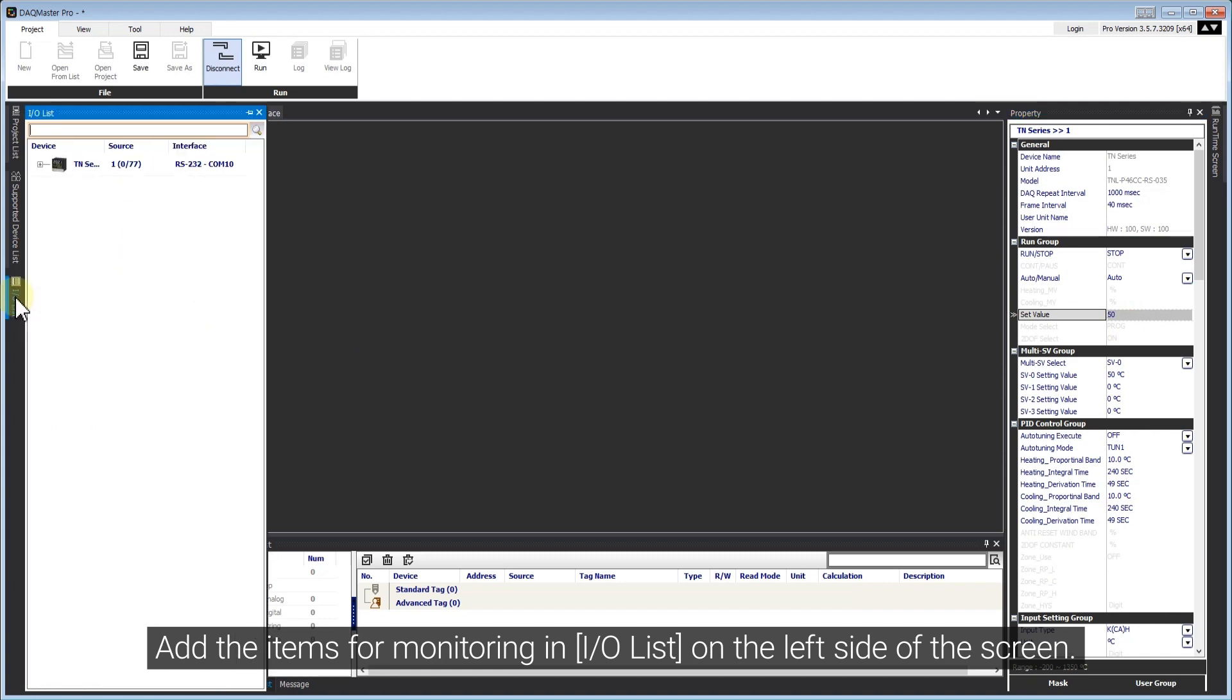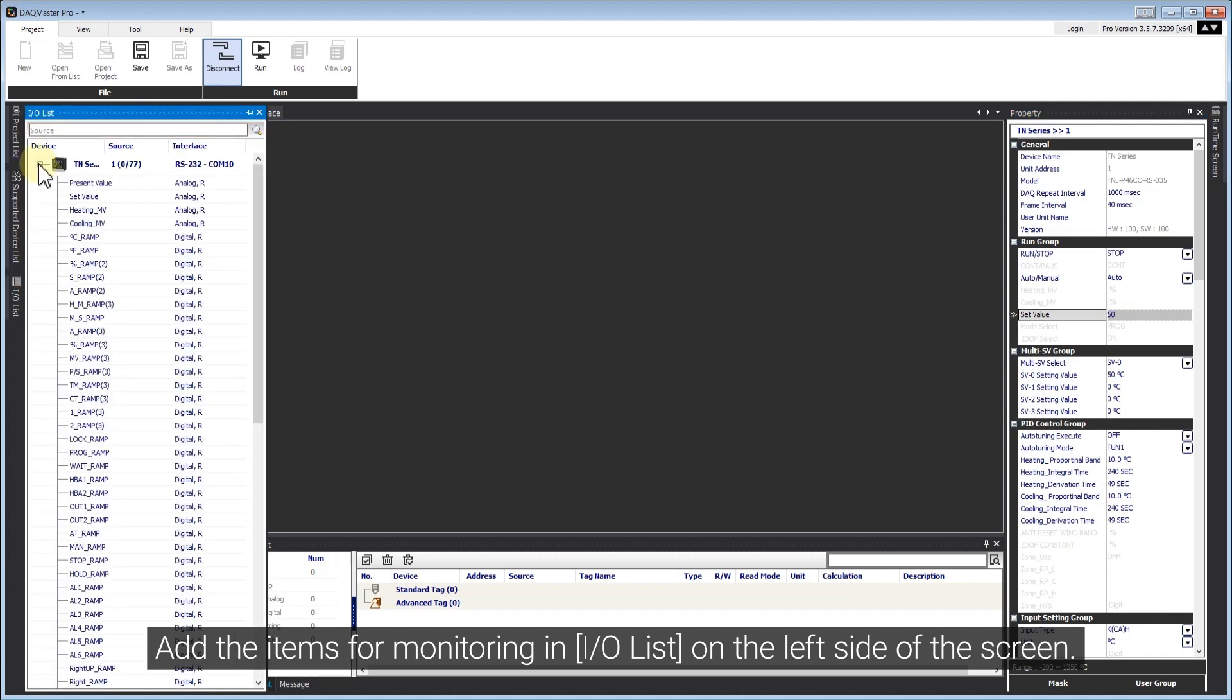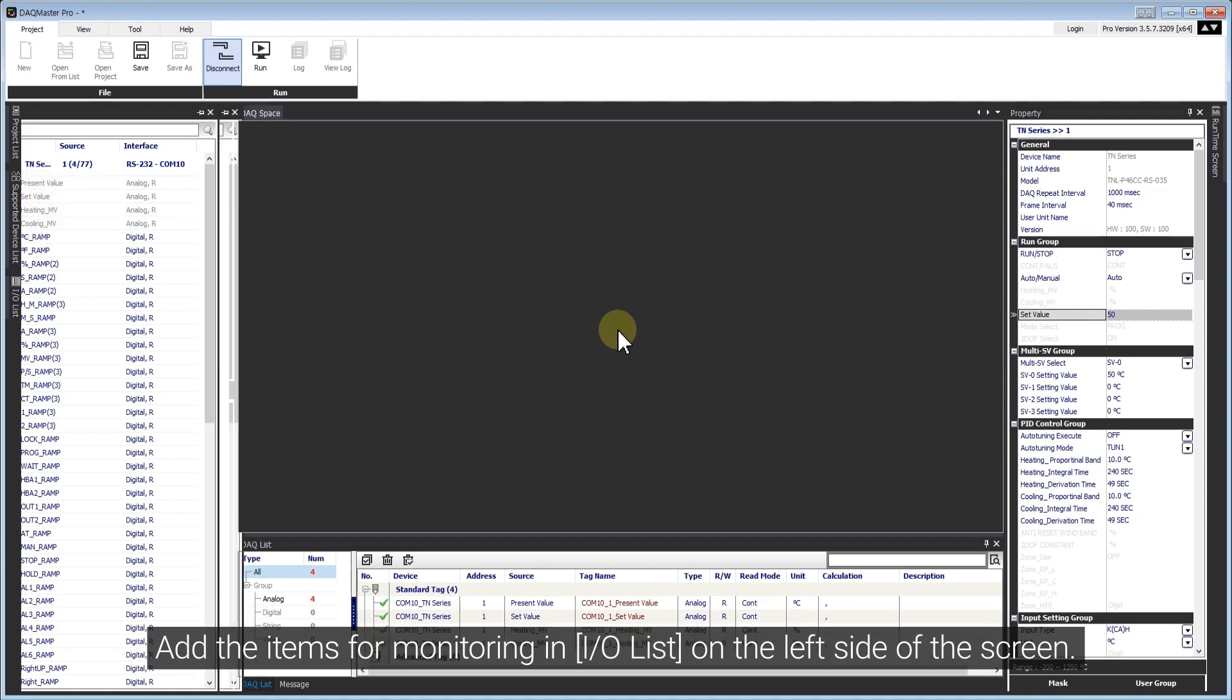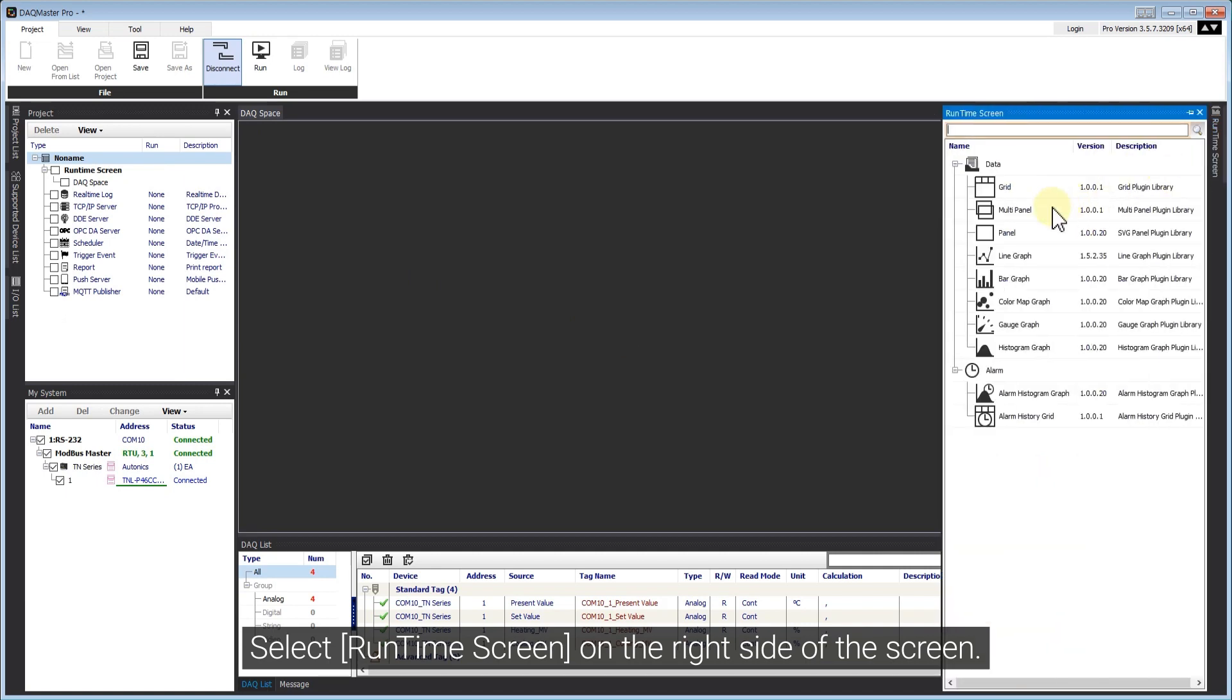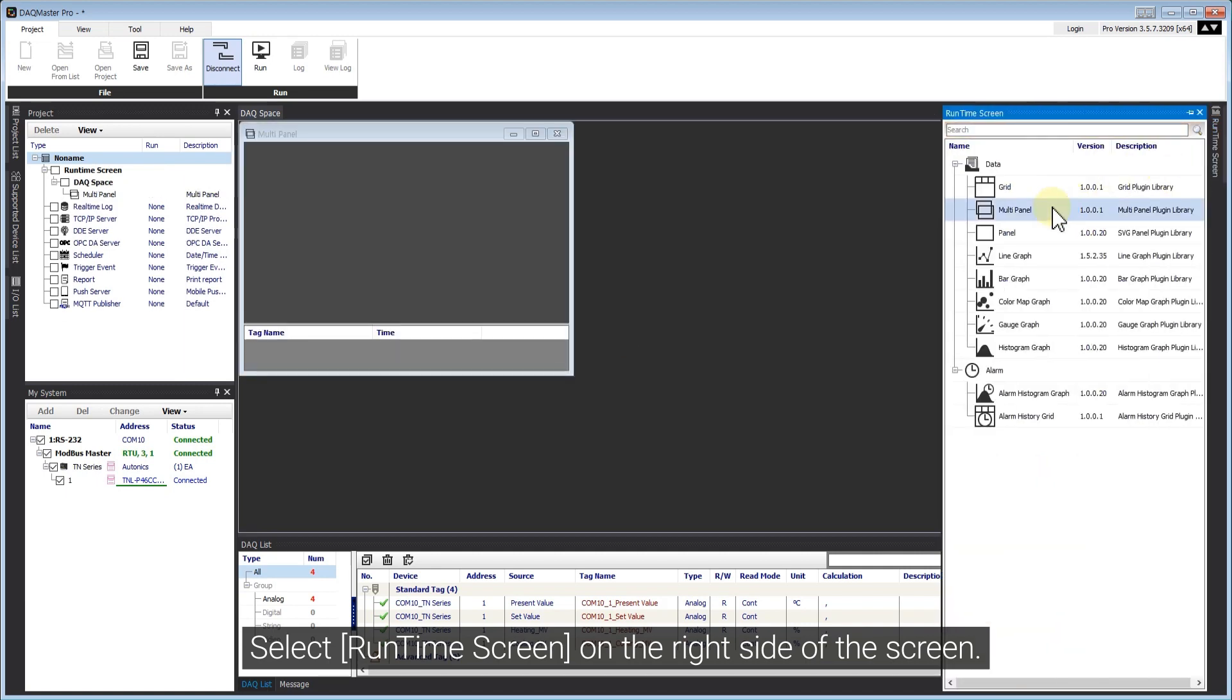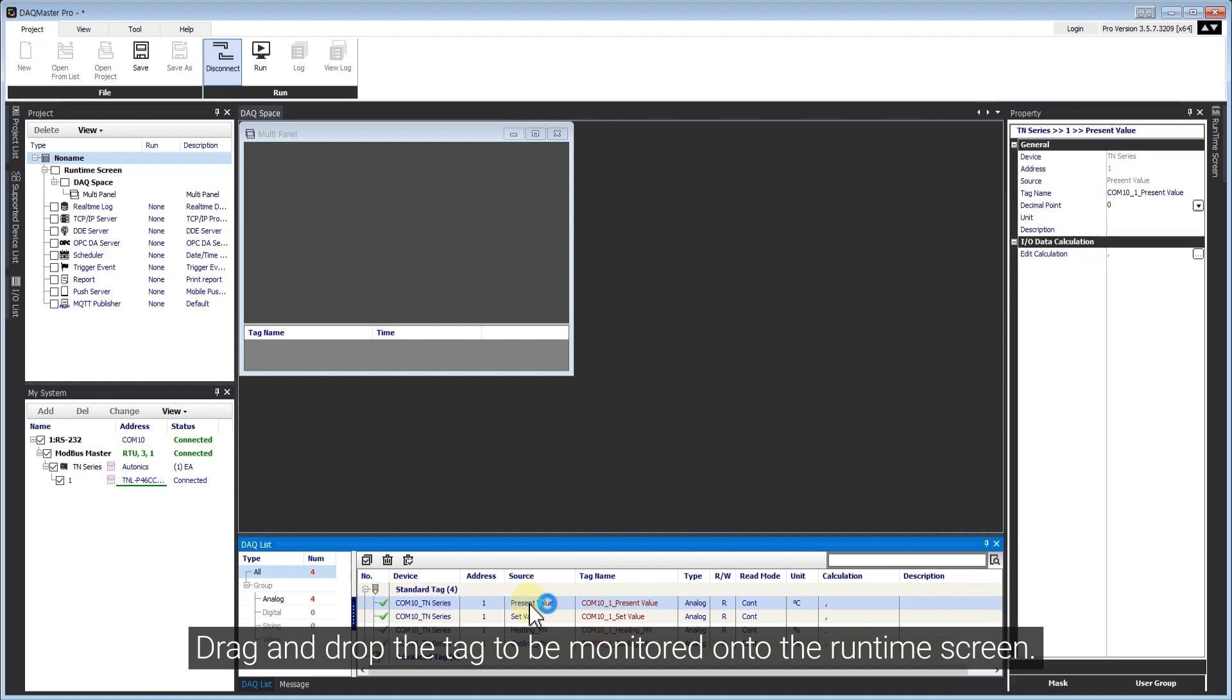Add the items for monitoring in I/O list on the left side of the screen. Select Runtime screen on the right side of the screen. Drag and drop the tag to be monitored onto the Runtime screen.